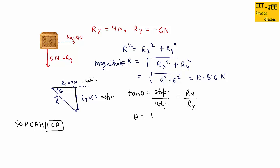So theta equals tan inverse Ry over Rx. This will give us tan inverse 6 over 9. So we got 34 degrees. So this theta equals 34 degrees.